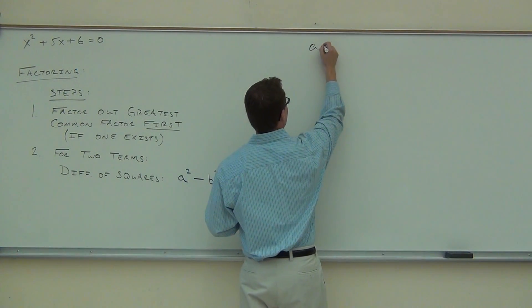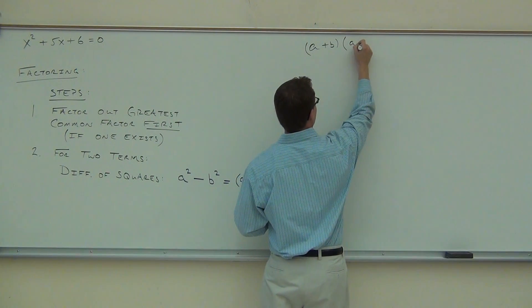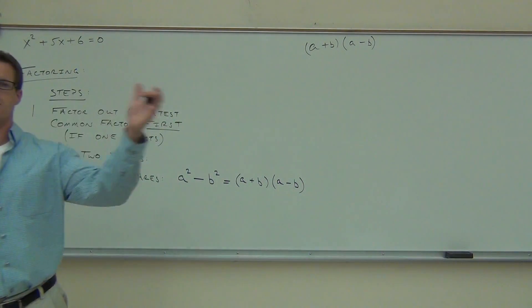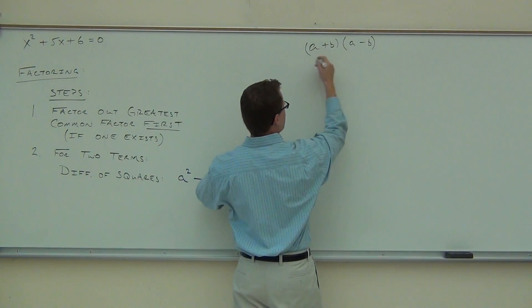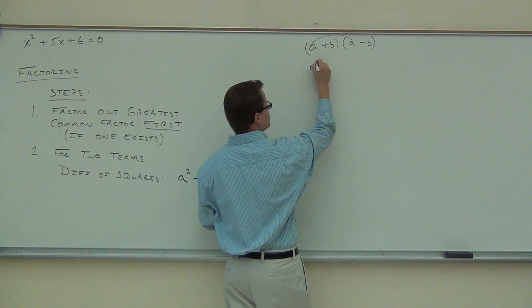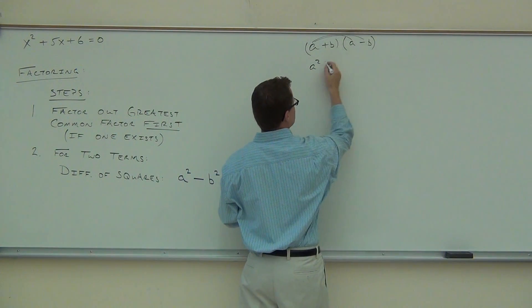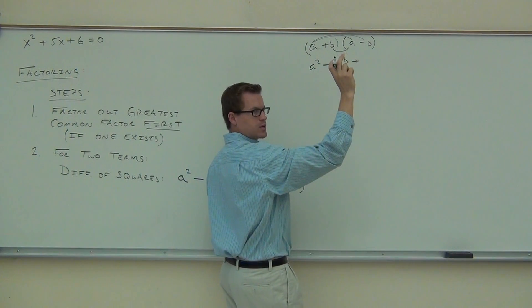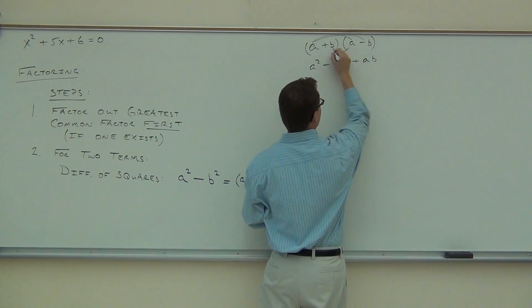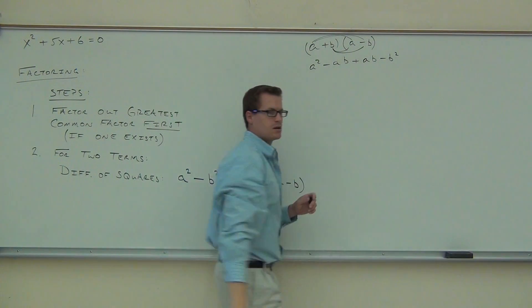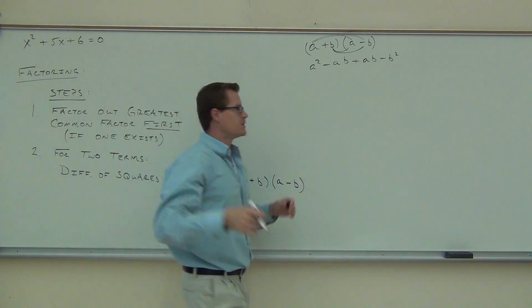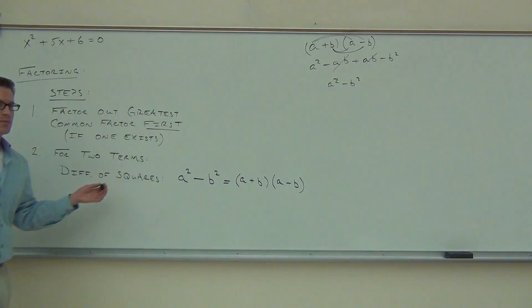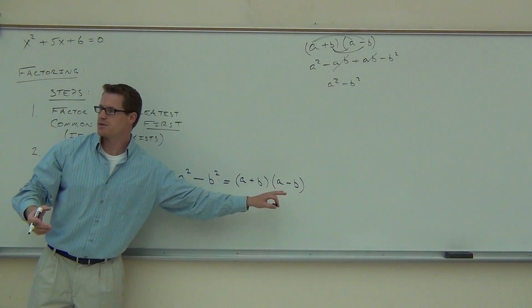Using FOIL to distribute (A + B)(A − B): A times A gives A squared, A times negative B gives minus AB, then plus AB, then minus B squared. Notice the middle terms cancel — minus AB plus AB equals zero. So you're left with A squared minus B squared. It works every time, and this is general — we made no assumptions about A or B. This works for everything.